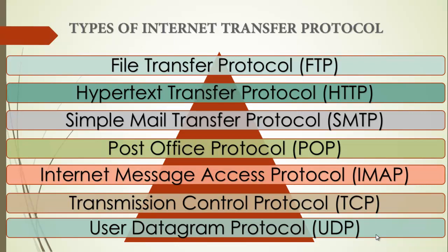We have the Simple Mail Transfer Protocol, or SMTP, which is used to send email messages between servers on the Internet. We have the Post Office Protocol, or POP, used to retrieve email messages from a server. Closely related is the Internet Message Access Protocol, or IMAP, also used to retrieve email messages from a server, but it allows for more advanced features than POP, such as the ability to access email from multiple devices and keep messages on the server.